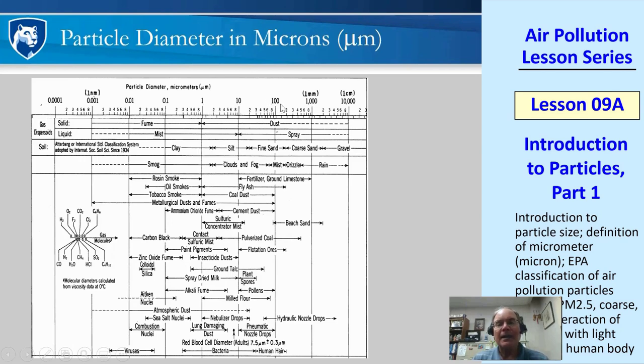On the log scale: 10, 100, 1,000 microns is a millimeter, and 10,000 microns is a centimeter. Going the other way: 0.1, 0.01, and 0.001 is a nanometer.